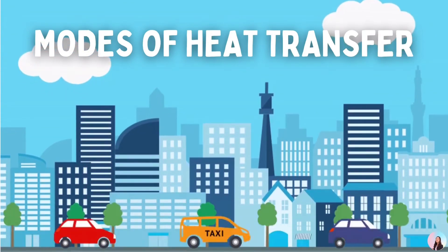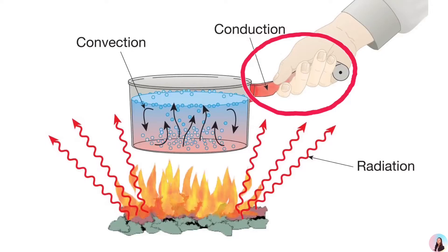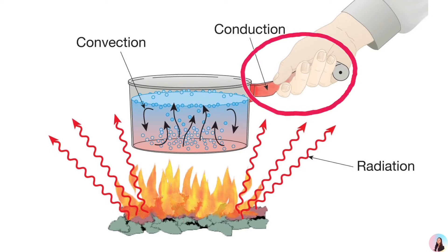First is what we called as conduction. It is the transfer of energy from one material to another through direct contact. For example, heat is transferred from the flame to the bottom of the casserole, to the handle, and lastly to your hand through direct contact.